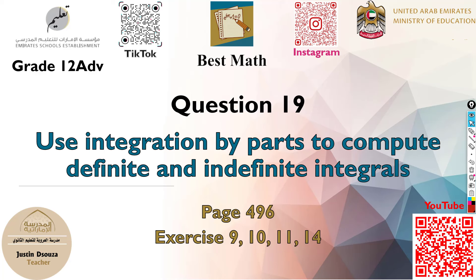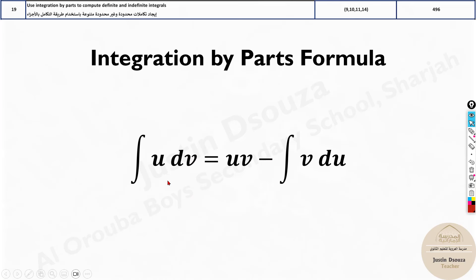Moving on to question number 19, it is to use integration by parts to compute definite and indefinite integrals. This integration by parts is very important. There are some problems which cannot be directly integrated — we don't have formulas — and then we use this. It is given by a formula: the integral of u dv equals u times v minus integral of v du.